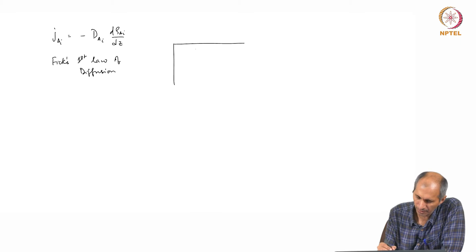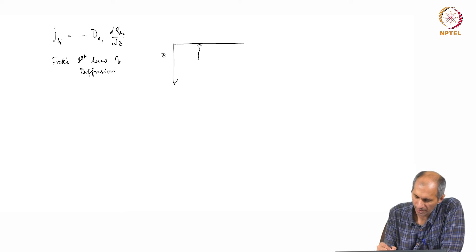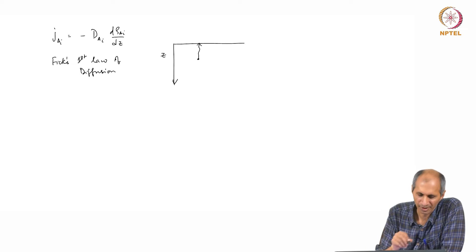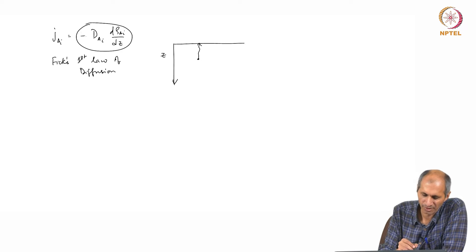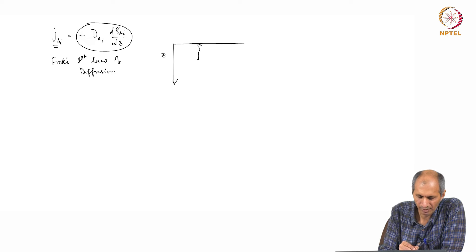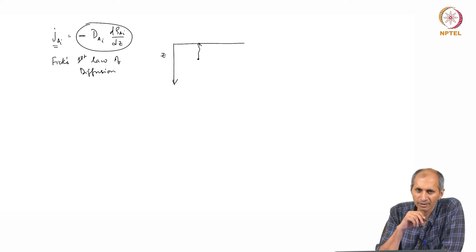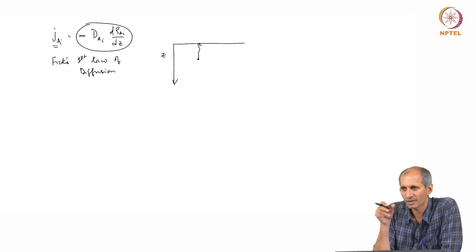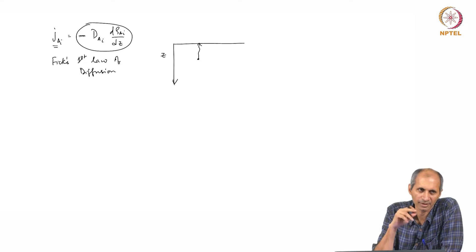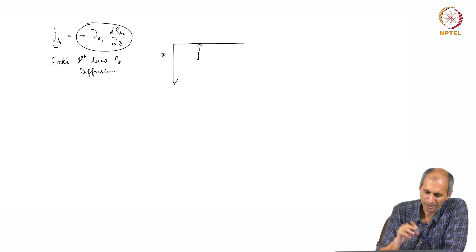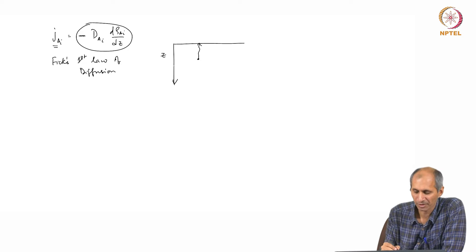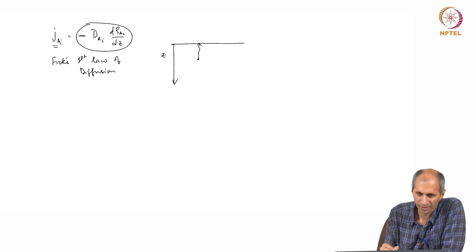In this system we are talking about, z is defined in this direction, so there is a movement happening — a chemical that is going somewhere. The negative sign in Fick's law is an indicator of the direction of the flux. This depends on how you are defining the frame of reference.